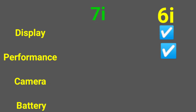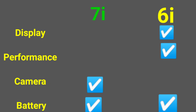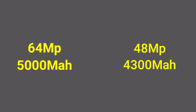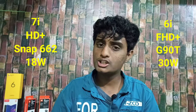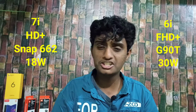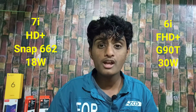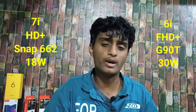The Realme 7i scores better in camera with 64 megapixels and battery with 5000mAh — so Realme 7i gets 2 points. The Realme 6i gets 3 points for display, performance, and fast charging. Overall, the Realme 6i is much better for its Full HD display, Helio G90 processor, and 18W or 30W fast charging support.